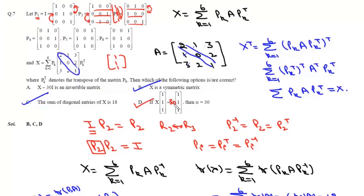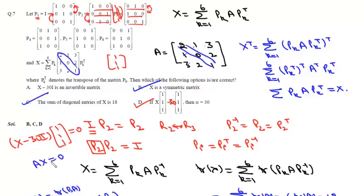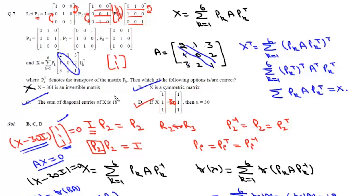Since alpha = 30, we can write (X - 30I)·[1,1,1]ᵀ = 0. This is a homogeneous equation Ax = 0 with a non-zero solution, so determinant of (X - 30I) must equal 0. Therefore X - 30I is a singular matrix and is not invertible. The correct options are B, C, and D.